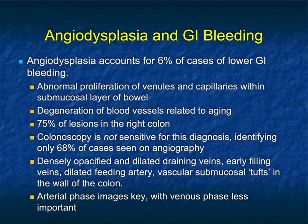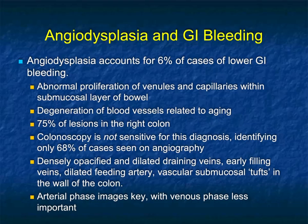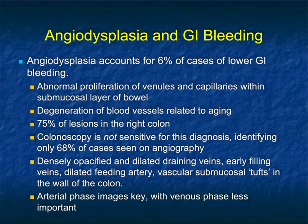Now let's look at angiodysplasia. We mentioned that angiodysplasia is the number one cause of small bowel bleeding. It accounts for about 6% of lower GI bleeding. This abnormal proliferation of venules and capillaries in the submucosal layer of bowel is more common in aging. 75% of cases are in the right colon, and colonoscopy is not sensitive for this diagnosis — it barely detects two-thirds of cases seen on angiography. CT is very good for looking at angiodysplasia: densely opacified and dilated draining veins, early filling veins, dilated feeding arteries, and vascular submucosal tufts in the wall of the colon are all things we need to look for.